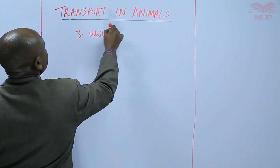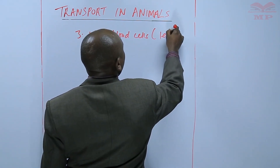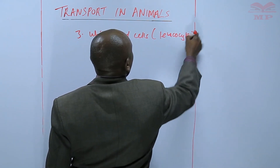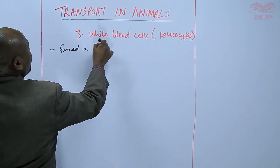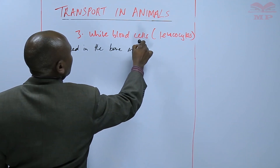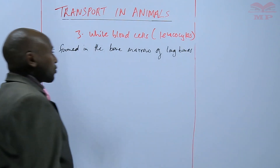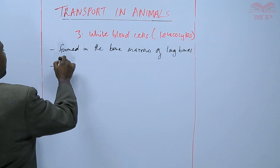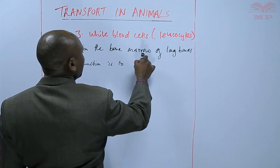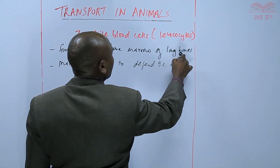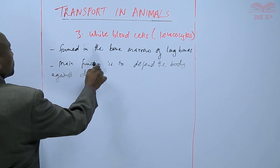We shall start with the white blood cells, also known as leukocytes. These blood cells are formed in the bone marrow of long bones. Their main function is to defend the body against disease-causing microorganisms.